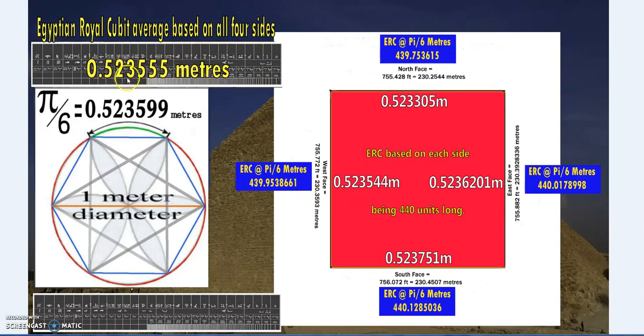The average of all four sides gives us 0.523555 meters. Human hair varies from 40 to 120 microns—this is 40 microns difference. That's the thinnest human hair. That's the difference as an average of all four sides.